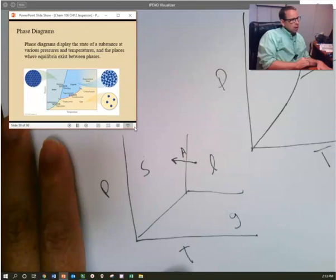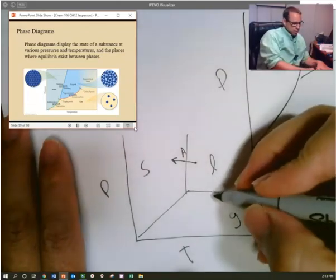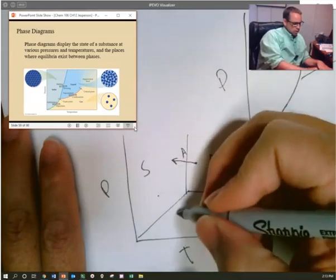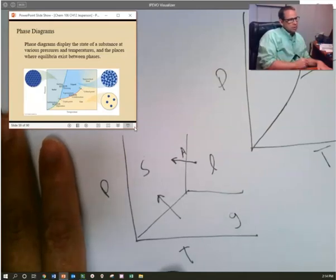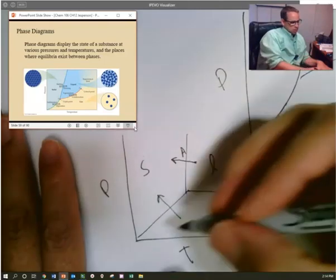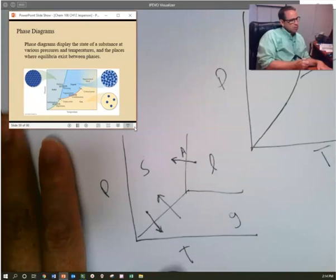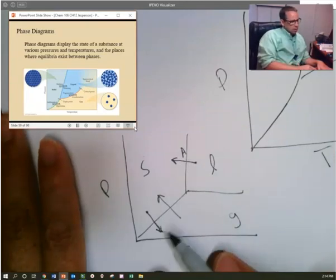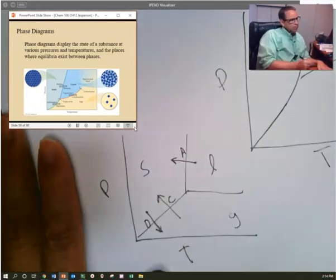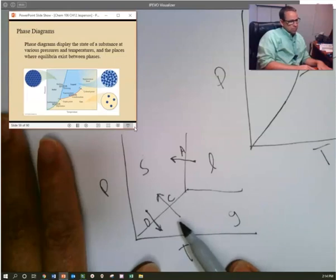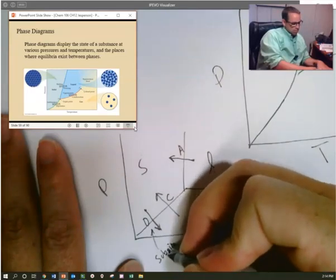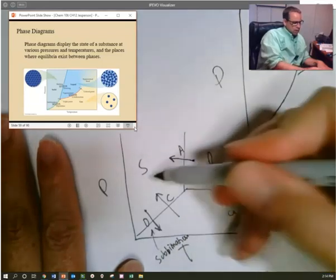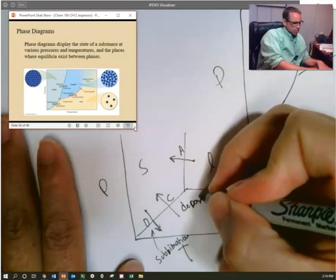Alyssa, what do we call it when we go from gas to solid? Or we could go solid to gas, do you know that one? Brielle, do you know either of these? I know that going from solid to gas it's sublimation. All right, sublimation. And going from gas to solid is called deposition.